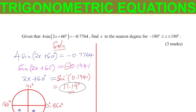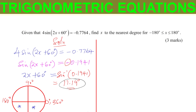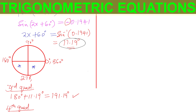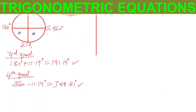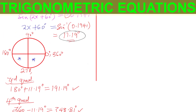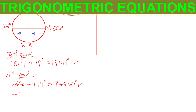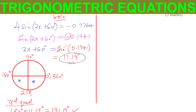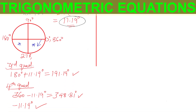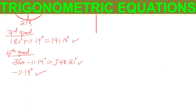Looking at the range from negative 180 to positive 180, we're not required to go to a second round. In the fourth quadrant, since the acute angle is 11.19 degrees, another possible angle is negative 11.19 degrees — negative angles are measured from the fourth quadrant in a clockwise direction. So our three angles are 191.19°, 348.81°, and negative 11.19°.